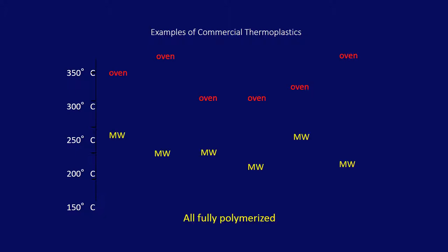This graph shows examples of commercial thermoplastics used in the electronics industry. Once again, these coatings are all fully polymerized with microwaves at these much lower temperatures.